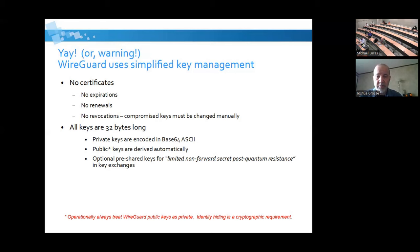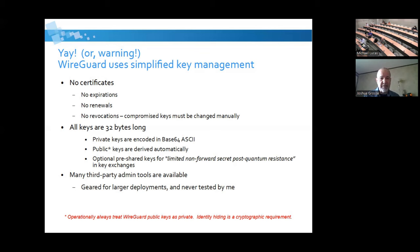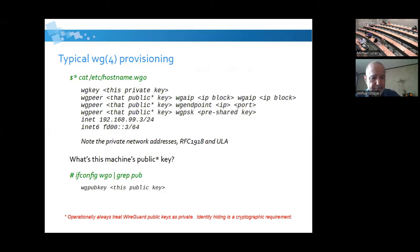There is an optional but recommended pre-shared key that you route securely between peers. I loved this phrase: 'limited non-forward secret post-quantum resistance.' I have no idea what that phrase really means other than it's perceived that this may have some resistance to cracking in a post-quantum world. There are now lots of third-party admin tools to help manage keys, since WireGuard itself does not. For me with half a dozen peers I really didn't need any of those tools.